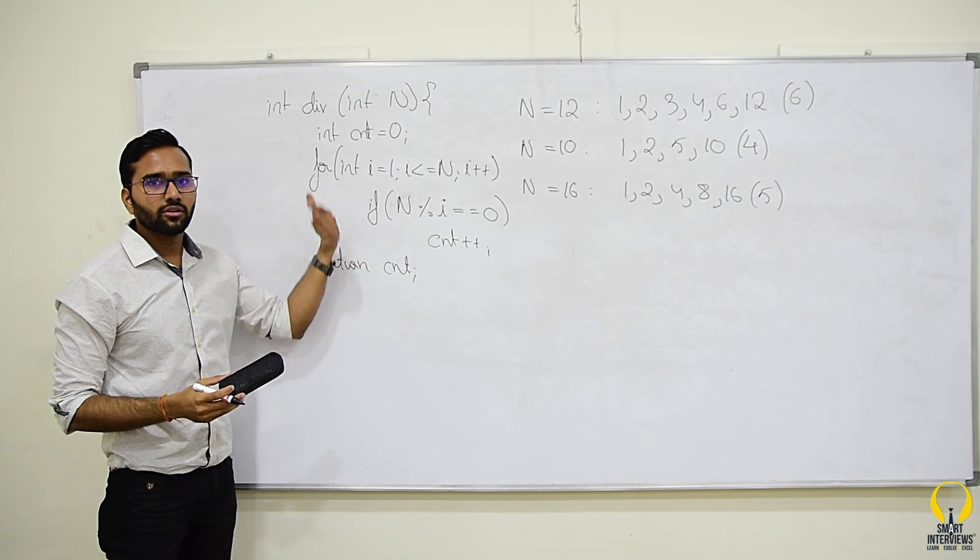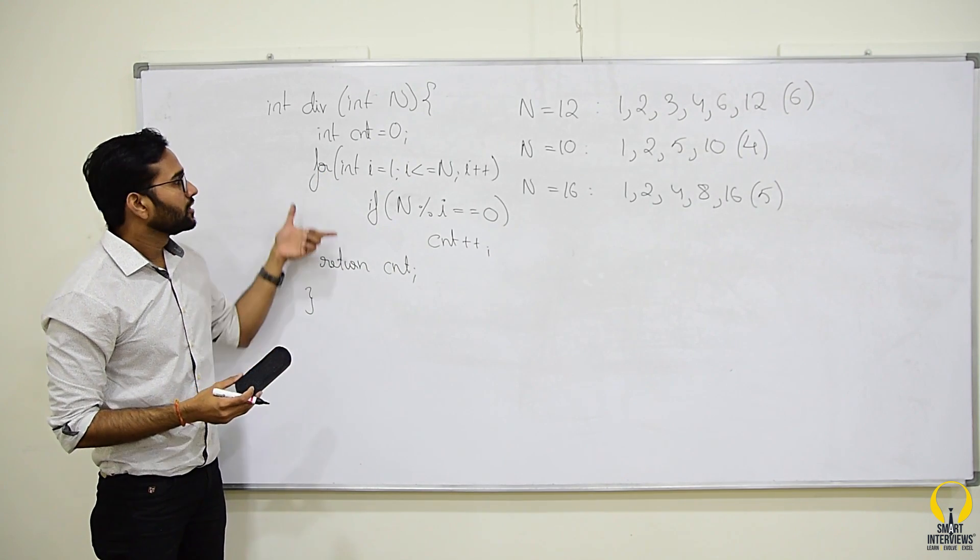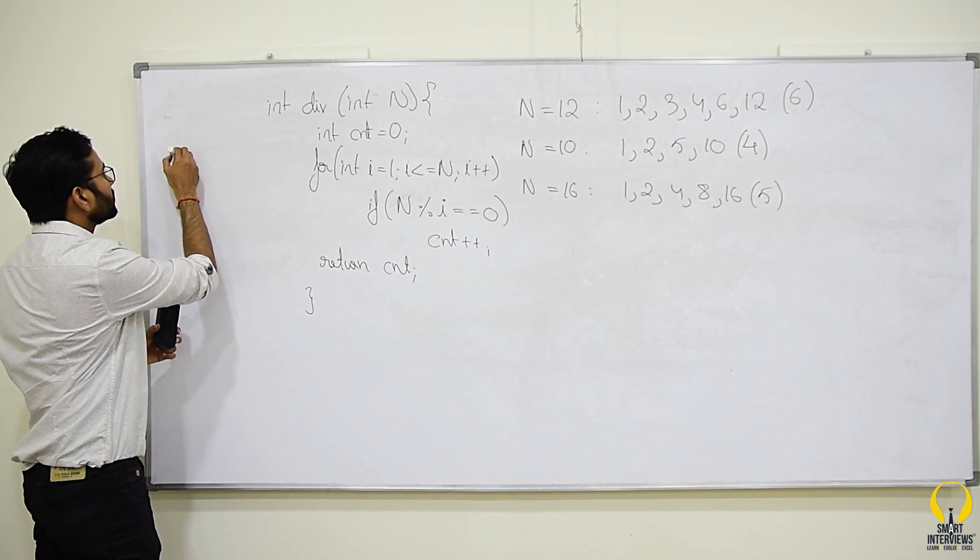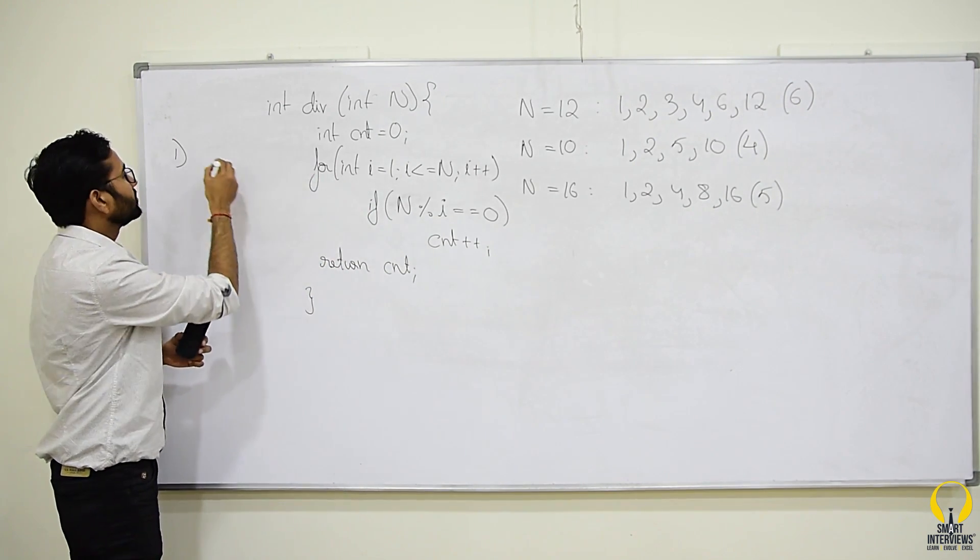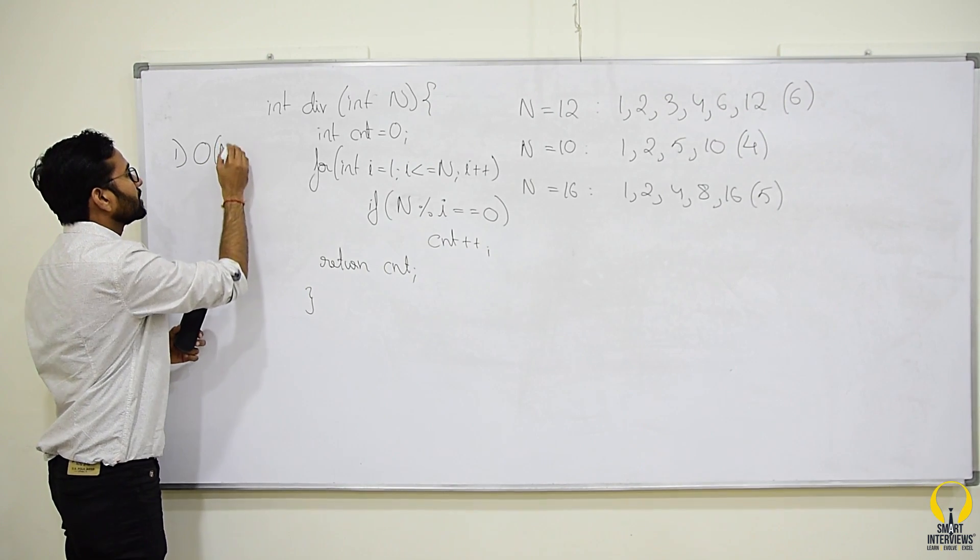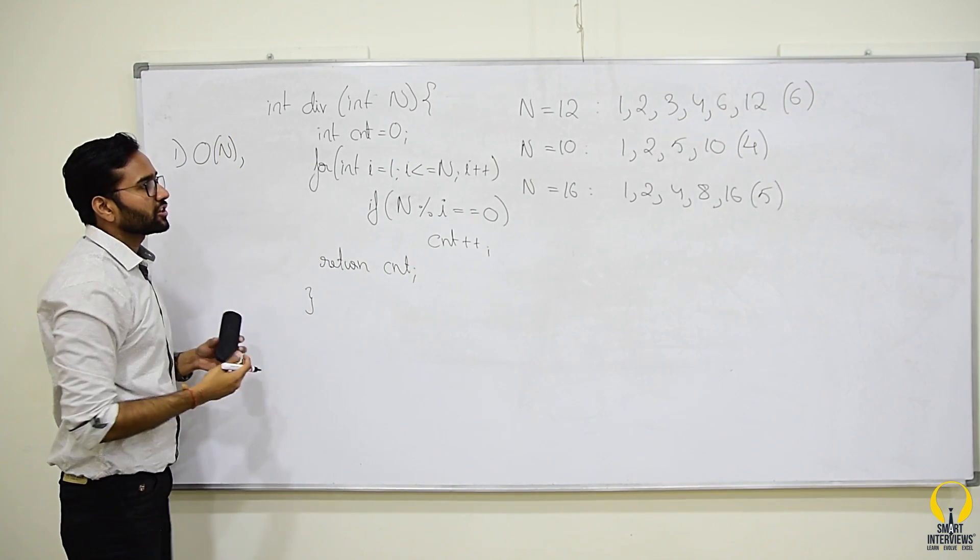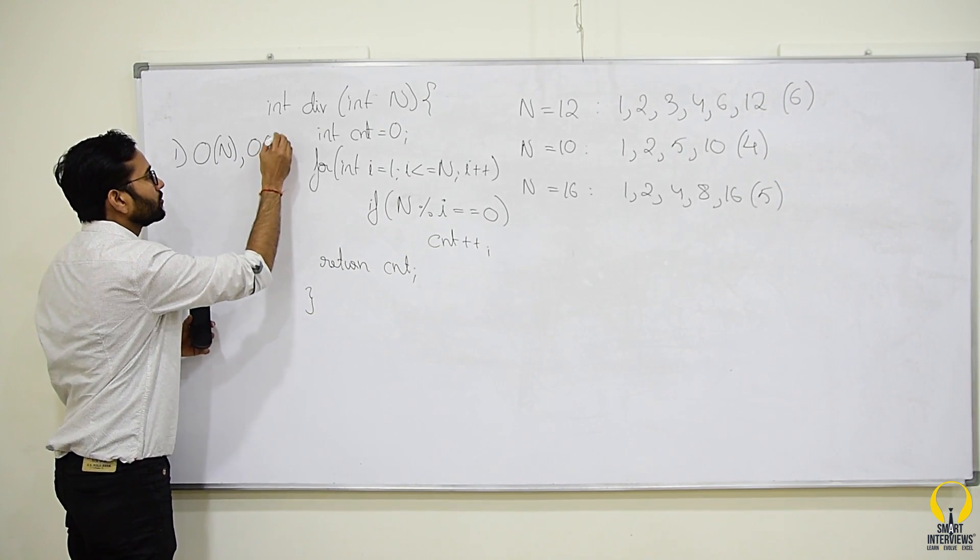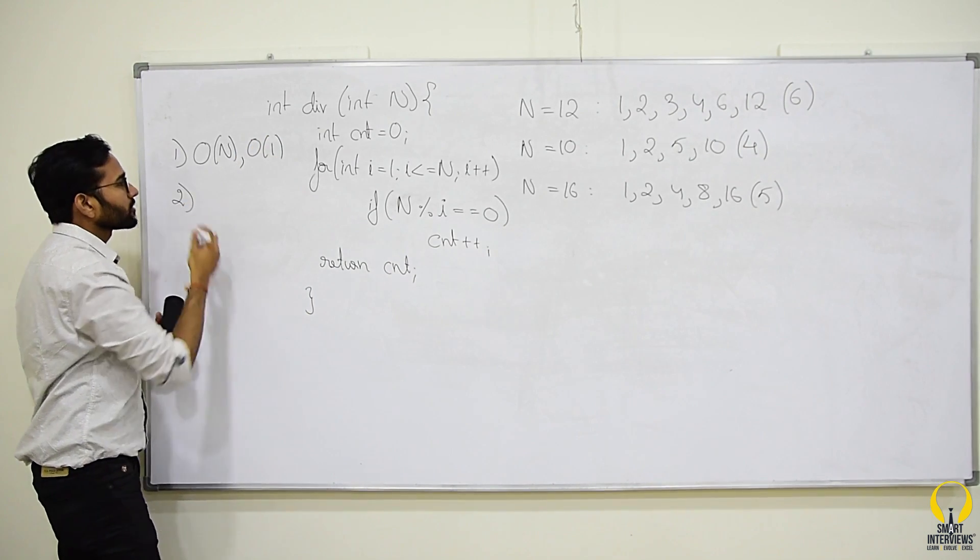If I ask you the complexity here, it is looping for n times. So, first solution, count becomes big O of n. What about space complexity? No extra space, big O of 1.